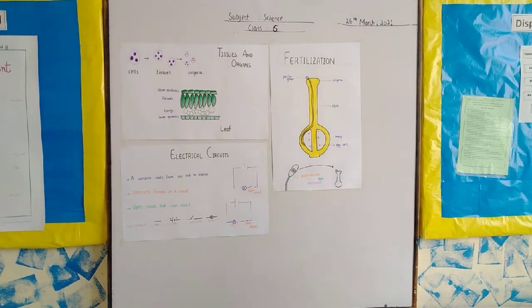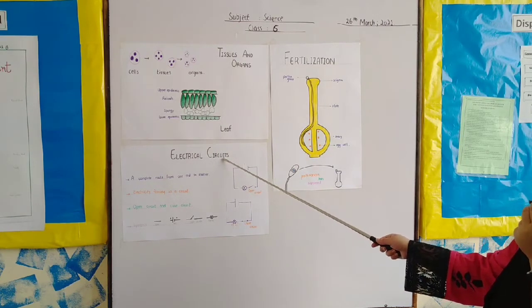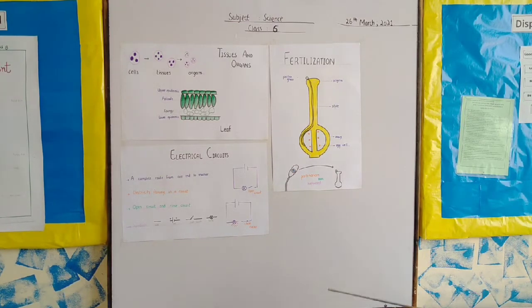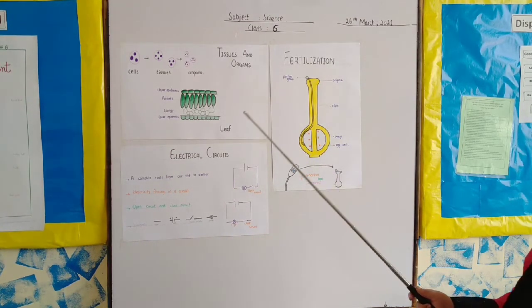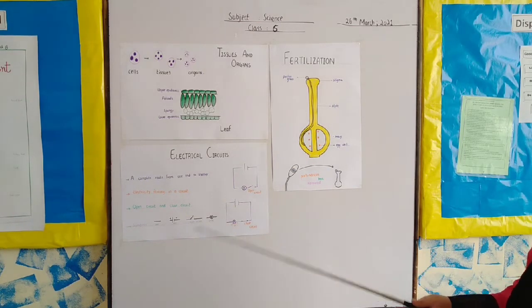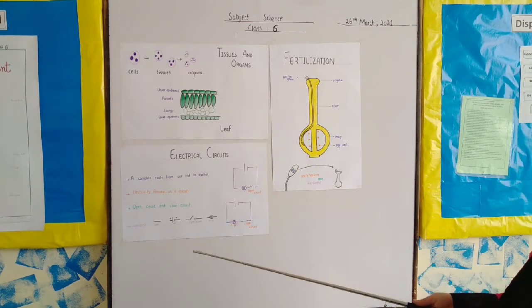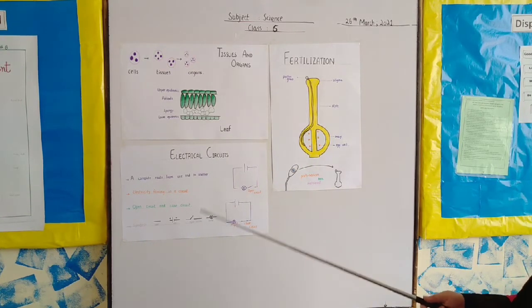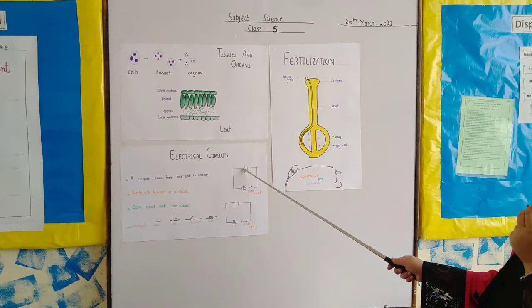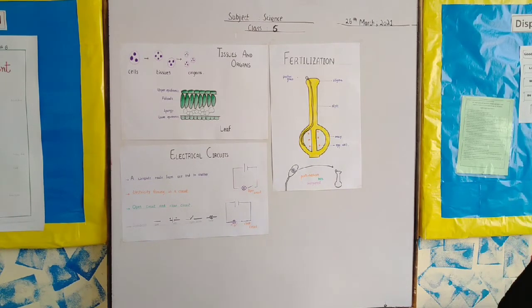Now we will move towards a very interesting topic which is electrical circuits. What are electrical circuits? First of all, you know that as the water flows in the pipes, similarly the current flowing in the wire is called electricity. And what is electrical circuit? The path of the wire from one end of the cell to another is called electrical circuits.